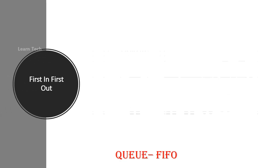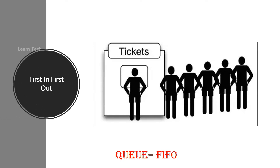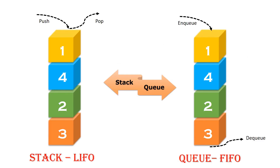Now, queue. Queue follows the first-in-first-out algorithm. For example, if you want to buy a ticket at a theater, you form a queue. The first person to arrive gets the first ticket. This is a real-time example. In the stack, last-in-first-out; in the queue, first-in-first-out.